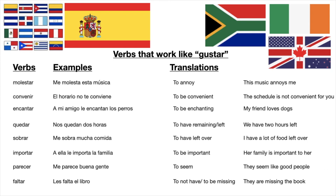There are plenty of verbs that work the same way and have this backwards construction in Spanish. The verb encantar means 'to find something enchanting' or to really like something. The verb sobrar means 'to have a lot of something.' The verb quedar means 'to have things remaining.' And the verb acabar means 'to run out of something or to finish up using something.' There are so many verbs in Spanish that use this construction, and gustar is a great one to start with because it's very common.